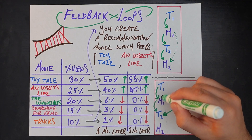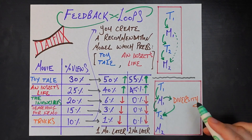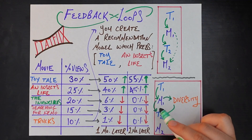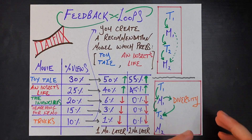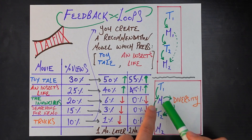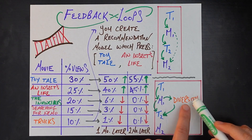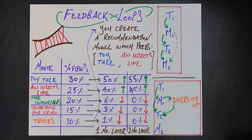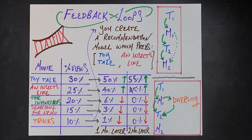This also means there's an arrow we need to draw in the diagram: the model you train itself is going to influence what this diversity looks like. The way you do diversity depends on what your model prioritizes. For example, in an alternate universe where your recommendation model was pushing for Searching for Nemo and Trucks, your diversity algorithm would look different — you'd want to promote Toy Tale and An Insects Life more. The diversity algorithm depends on the selection biases learned by your model.